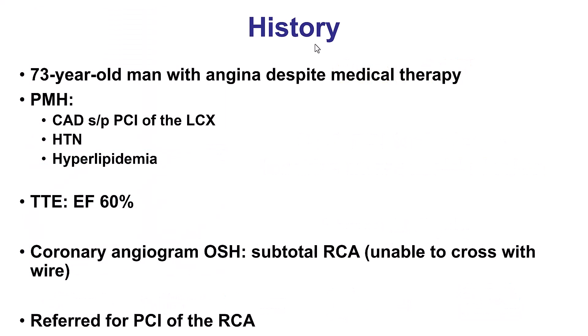The patient was a 73-year-old gentleman who presented with medical refractory angina due to a subtotal lesion in the right coronary artery that could not be crossed with the guide wire. As a result, he was referred to our institution for a repeat PCI attempt.